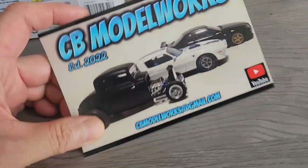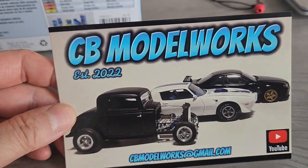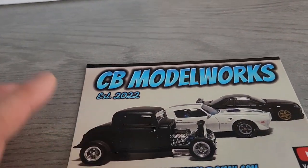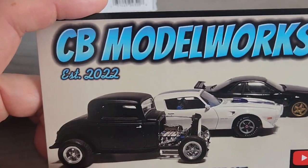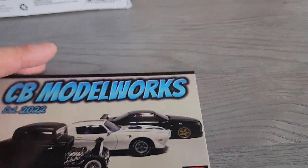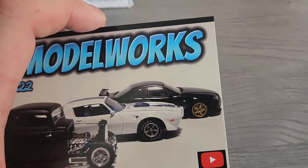I also received a shop card from Chris, CB Model Works. Very nice card. I don't know my 30s Ford, so I assume that's like a 32 three window coupe. This looks like a 69 or 70 Firebird and what looks to be possibly a Nissan Skyline.